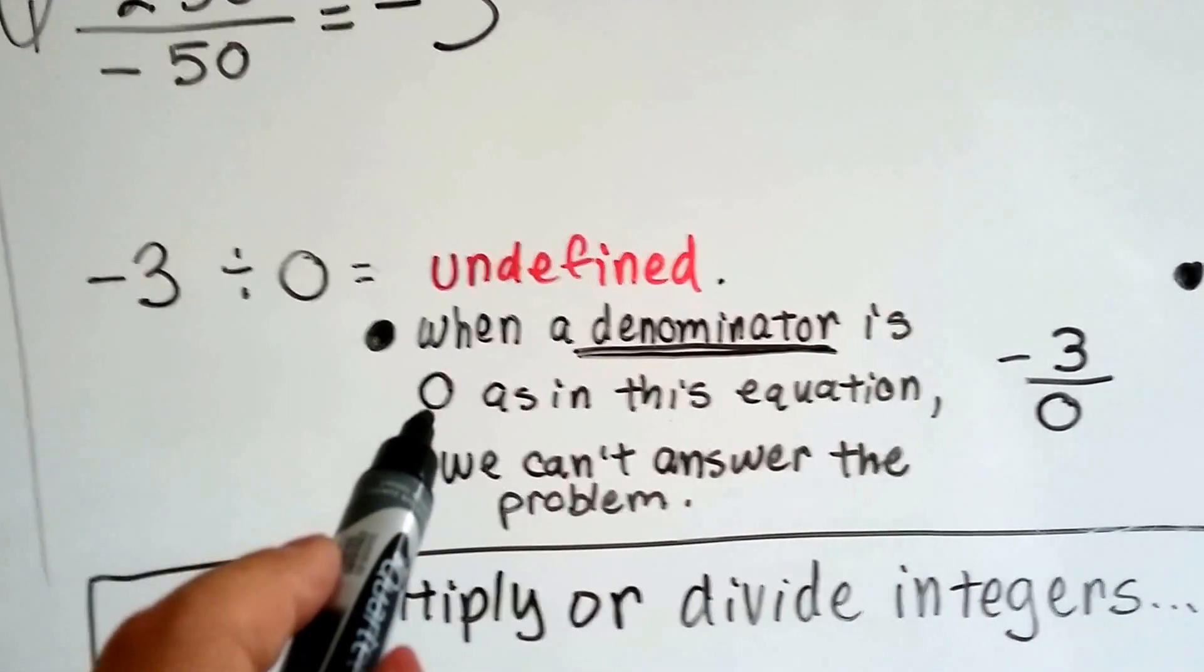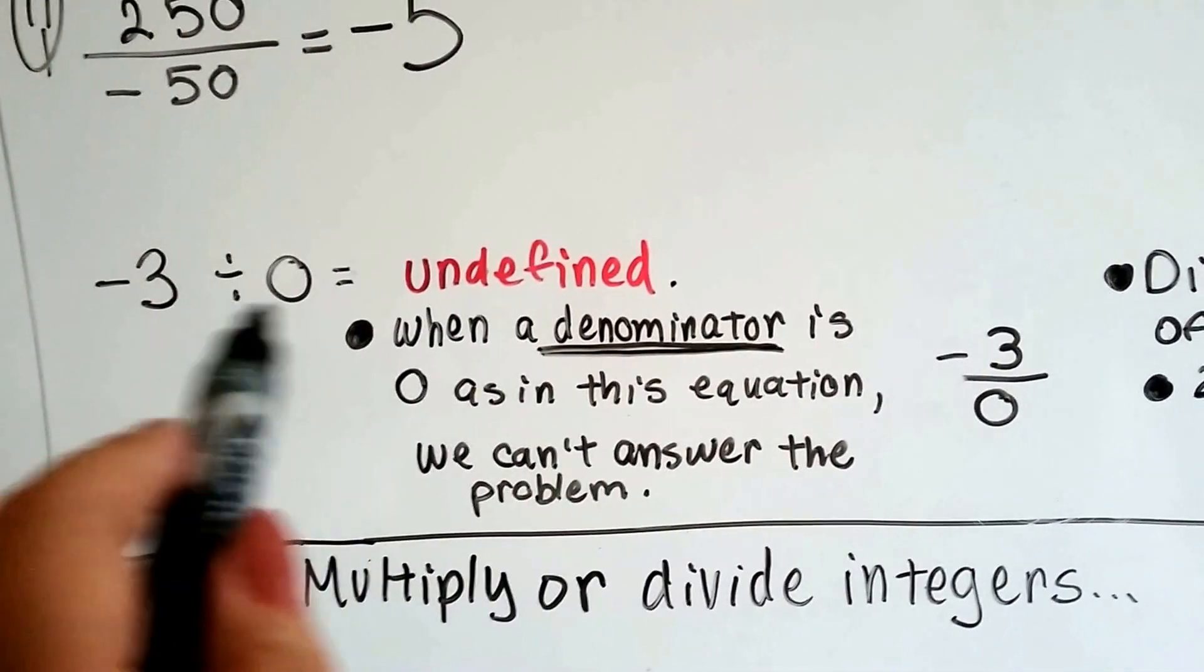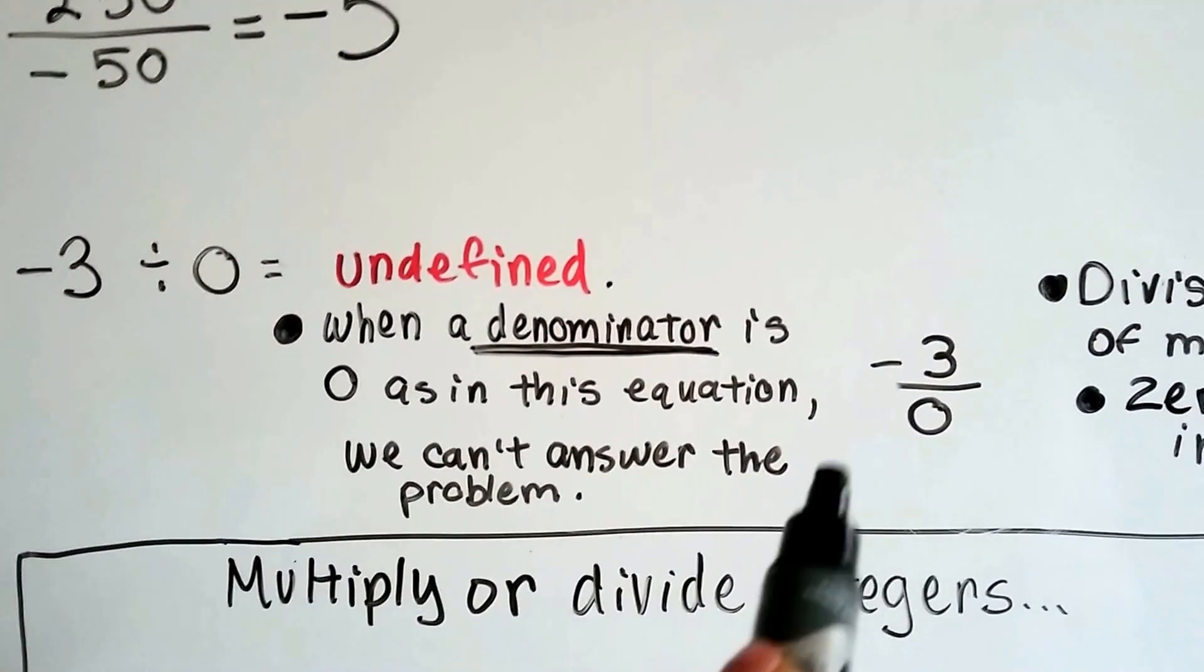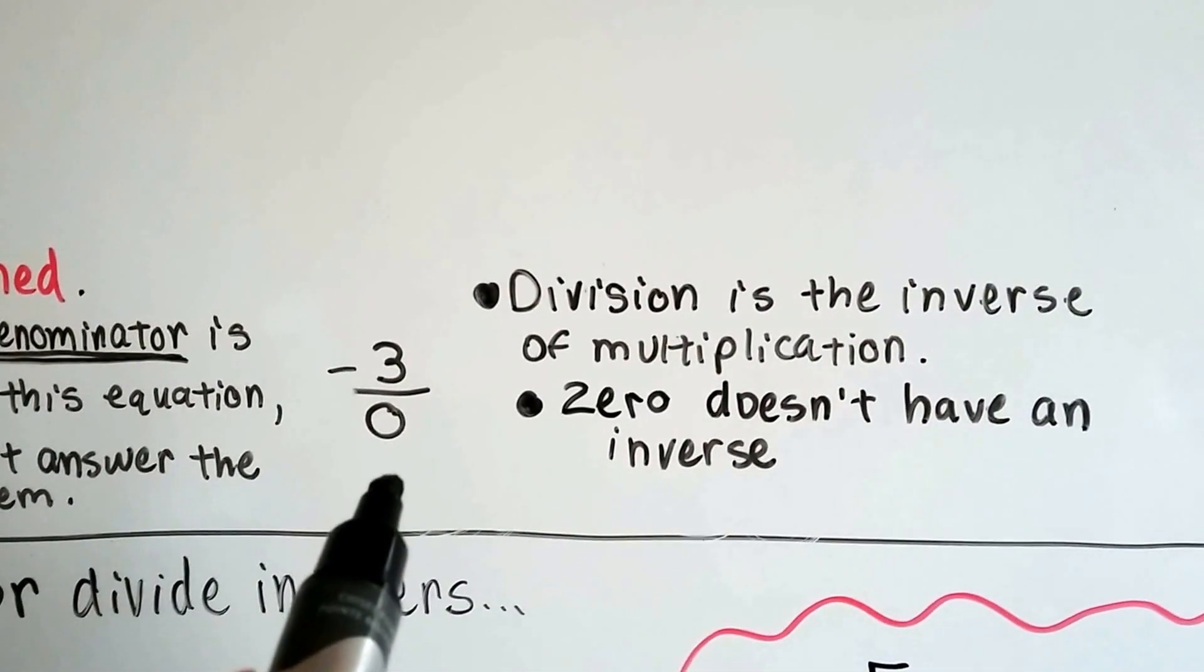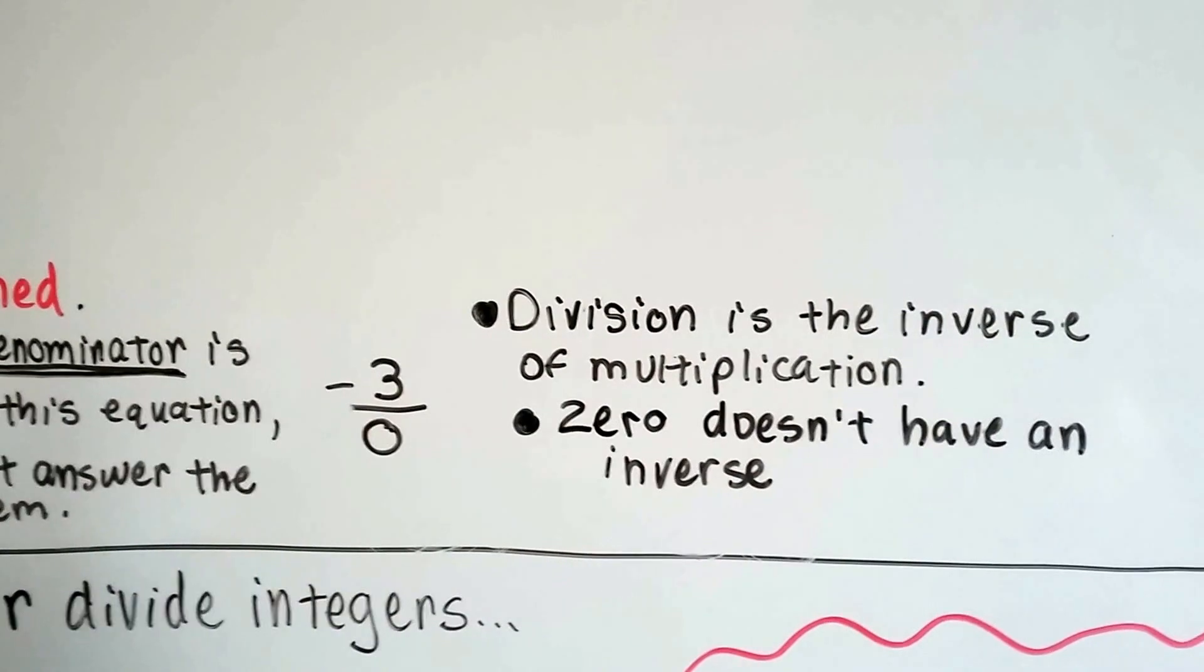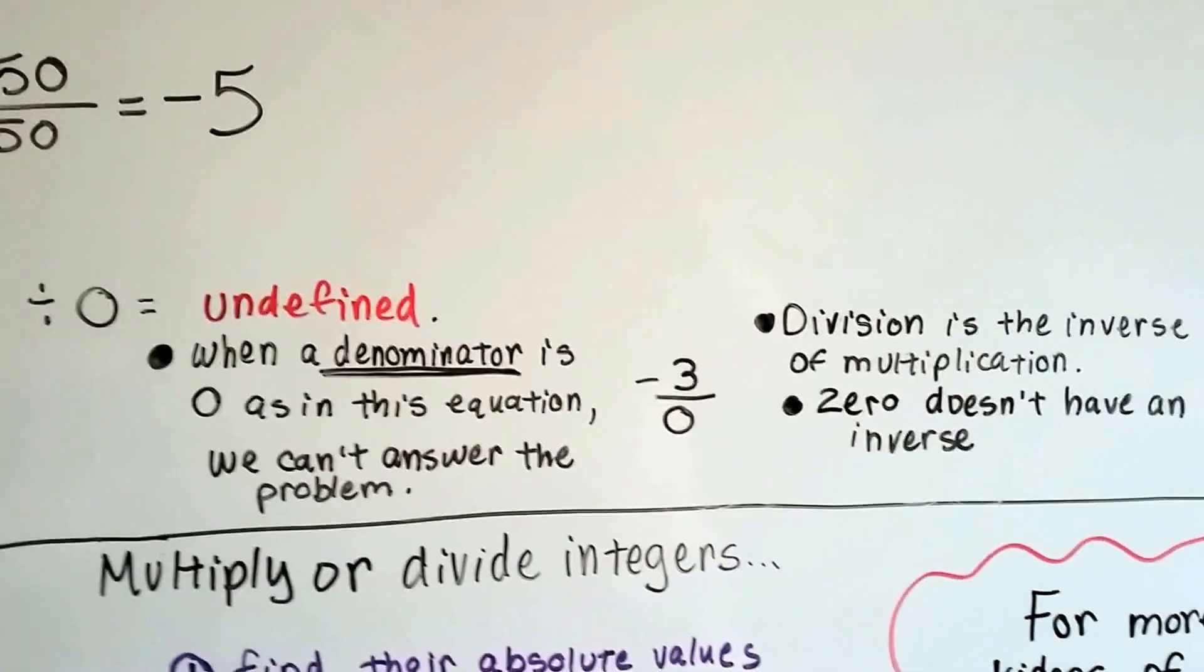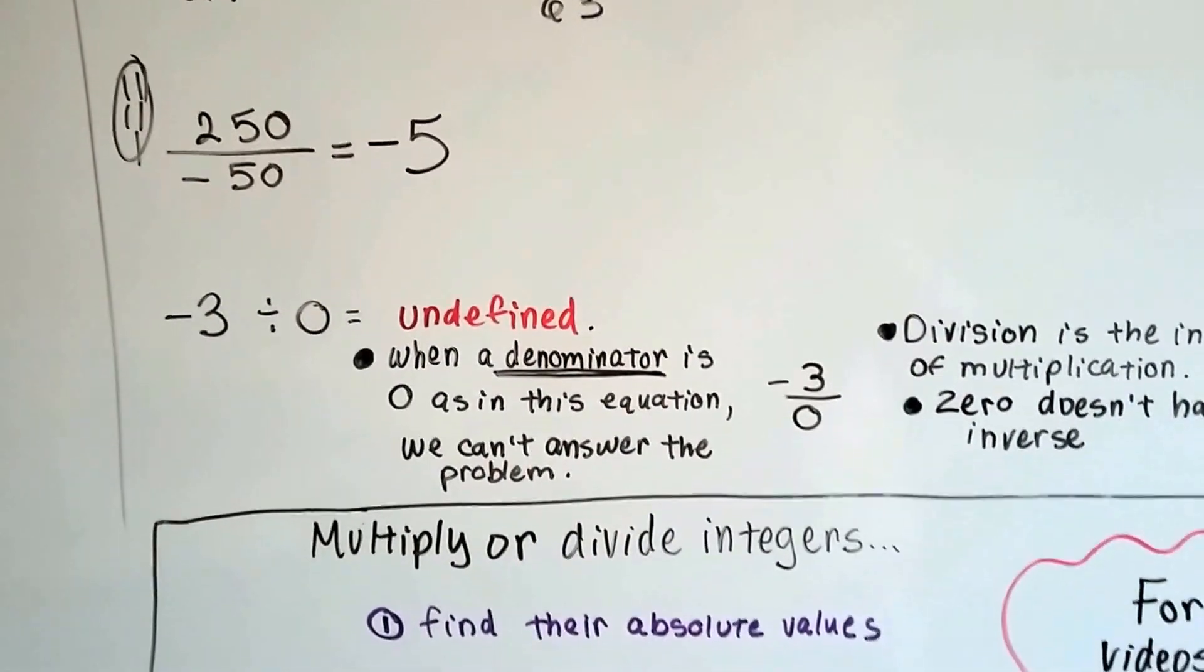Well, when a denominator is 0, like this one, negative 3 is going to be over 0, because that's what this means. Like, in this equation. We can't answer the problem. Division is the inverse of multiplication and 0 doesn't have an inverse, so we can't do this one. And we cover this more as you get older and talk about rational numbers. So, for right now, just know that you can't divide something by 0. Okay?